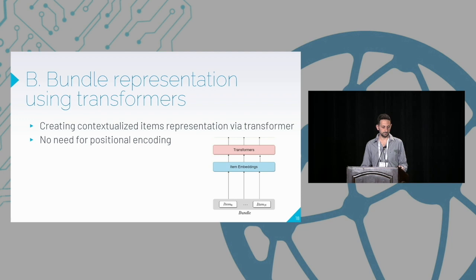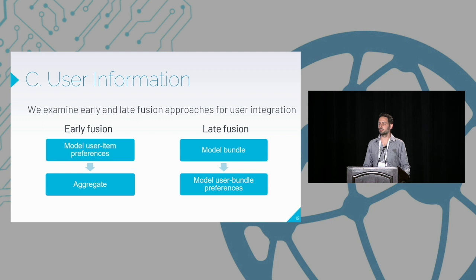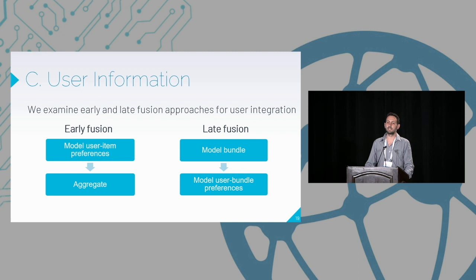As for integrating user information, there are two ways: early fusion and late fusion. In early fusion, the user wants to interact with a specific item within the bundle — that's the motivation for interacting with the bundle — and then we aggregate to understand preferences towards the whole bundle. In late fusion, the user has preferences towards the bundle as a whole unit, and we model this as their preferences.